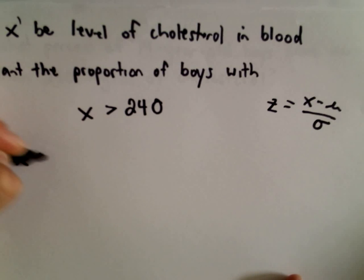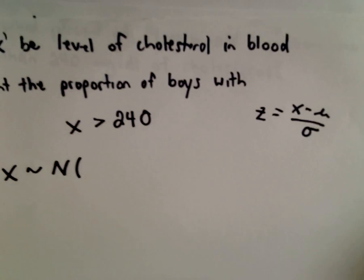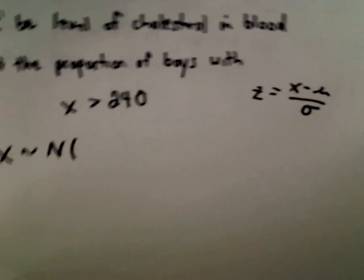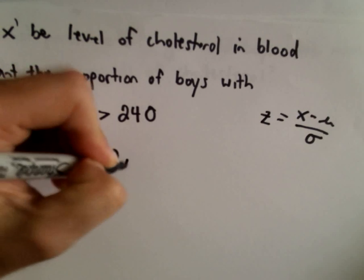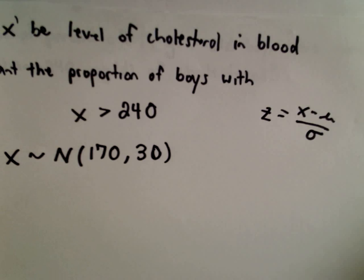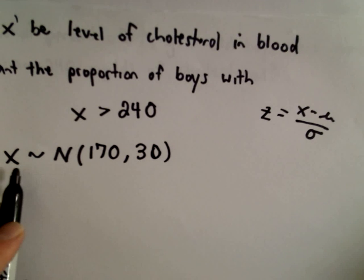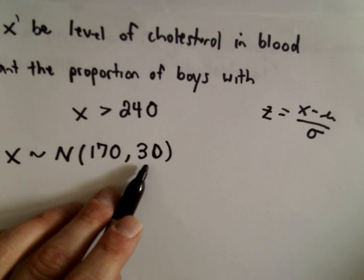X is normally distributed with a mean of 170 and the standard deviation was 30. That's just notation saying that X is normally distributed with a mean of 170, standard deviation of 30.